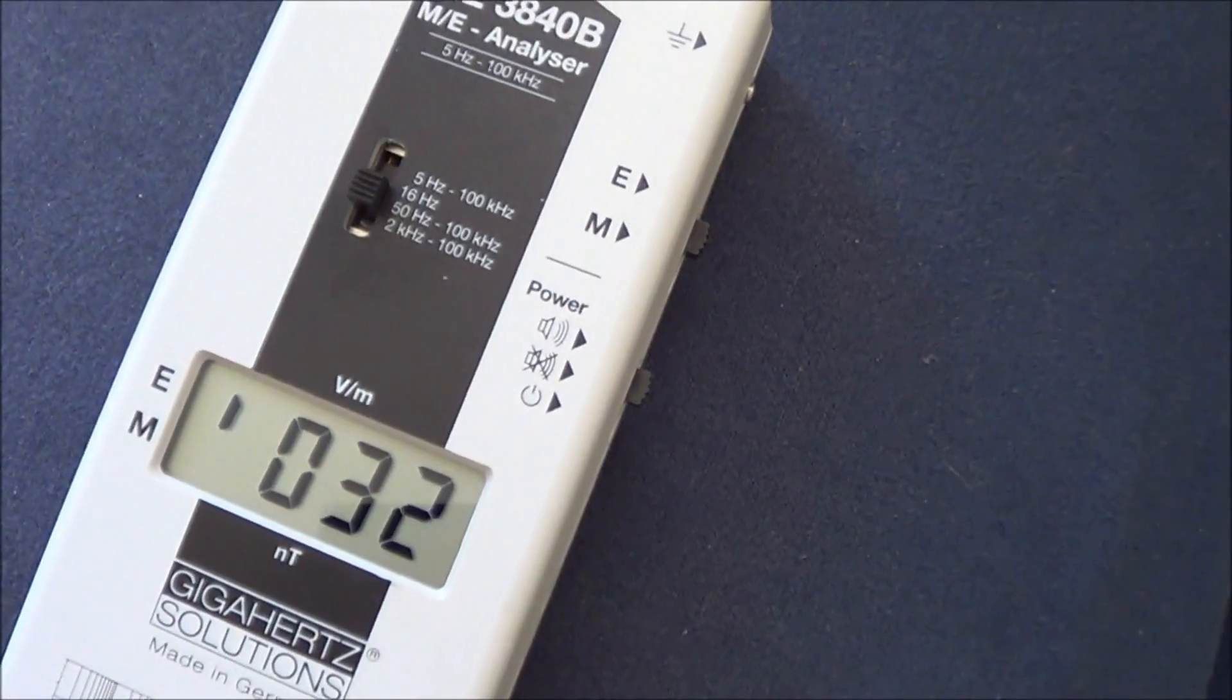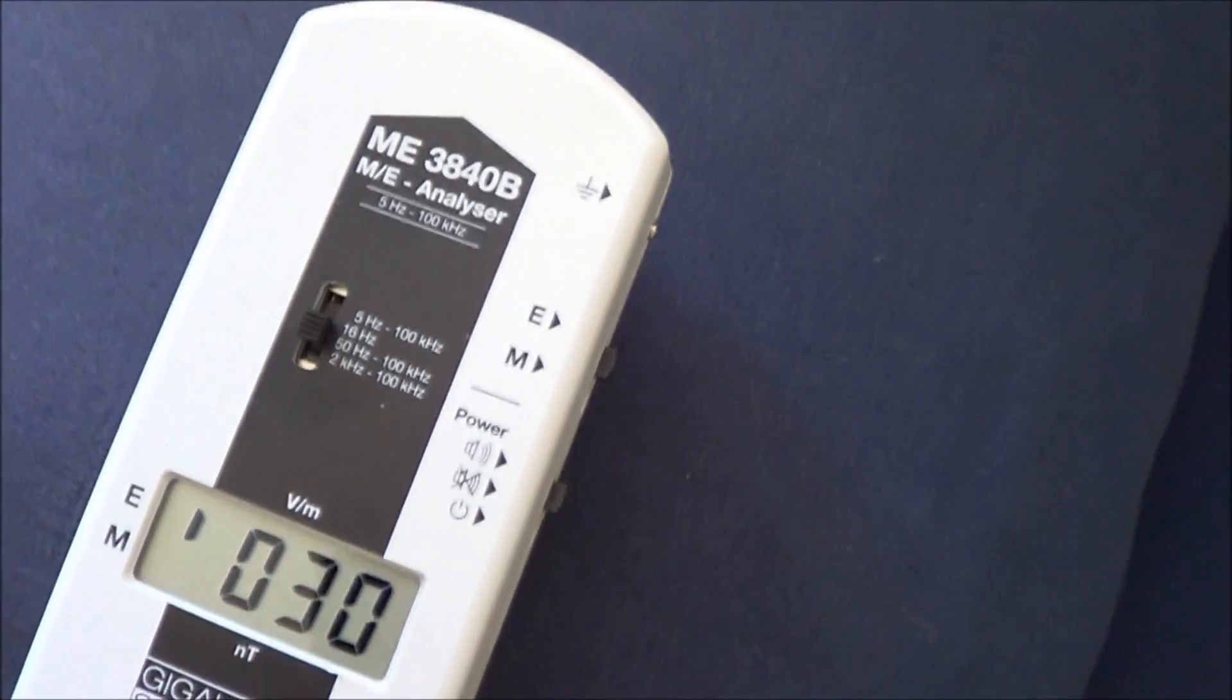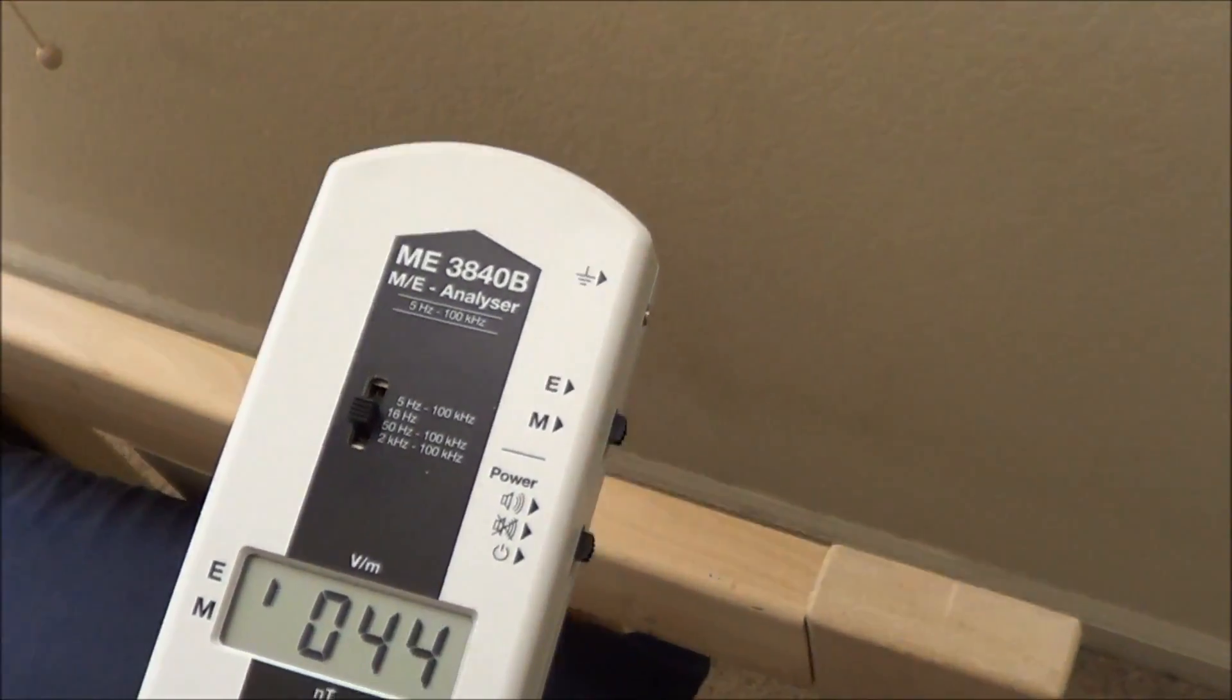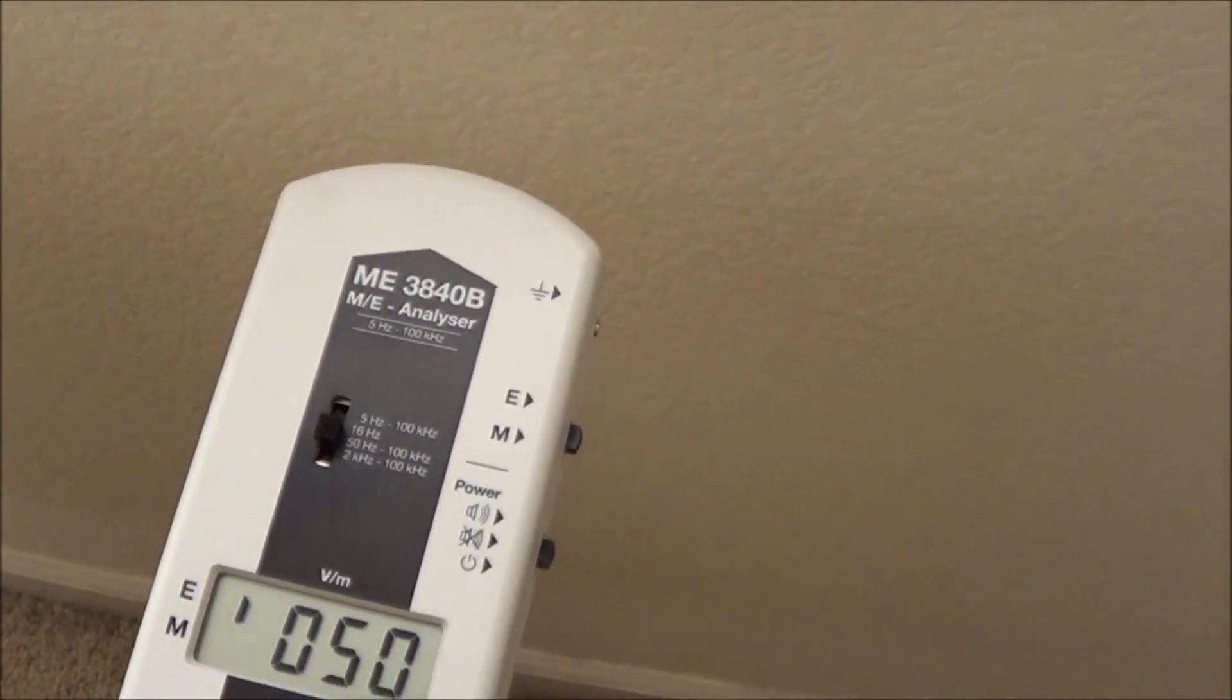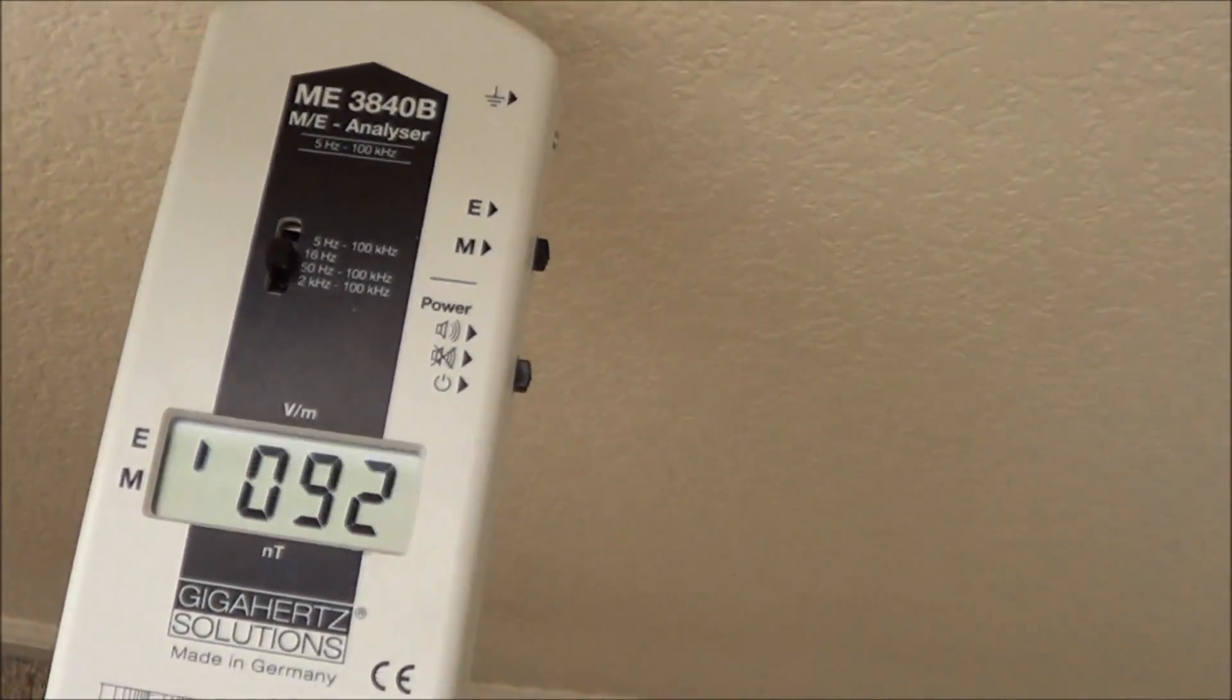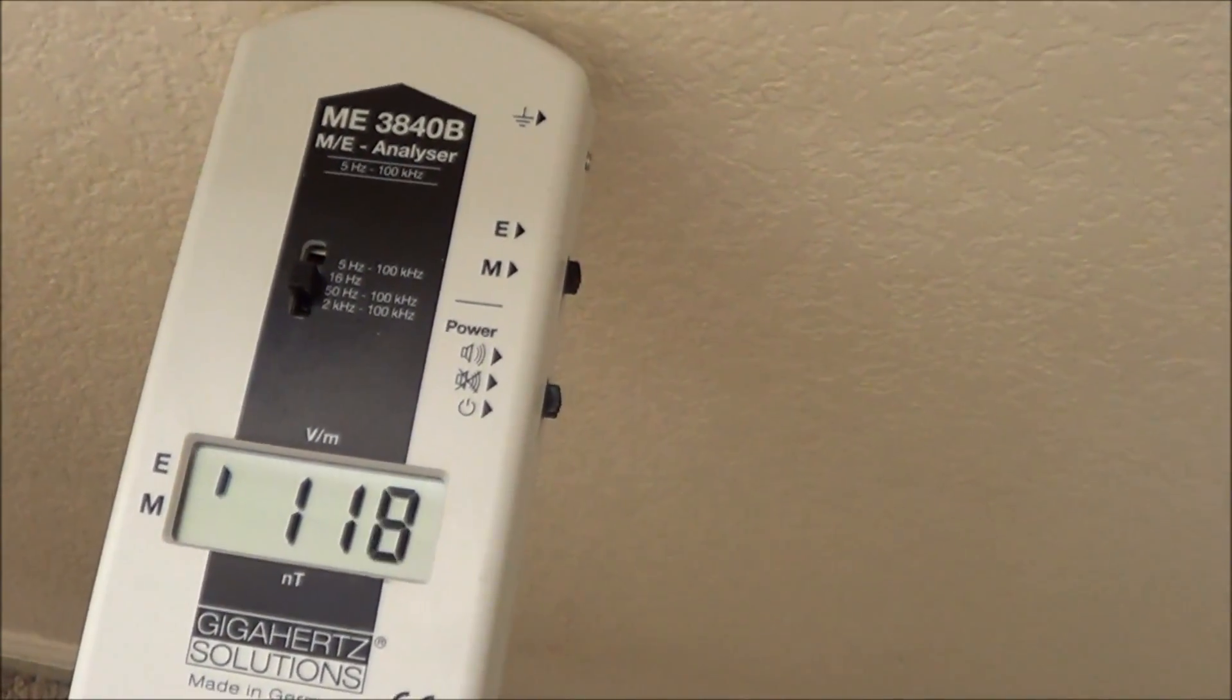And again, it looks like the readings here are about 30 volts per meter. Now watch what happens when I go closer to the wall. You can hear the little Geiger counter sound that the meter gives off.